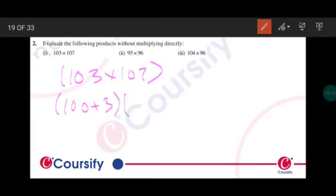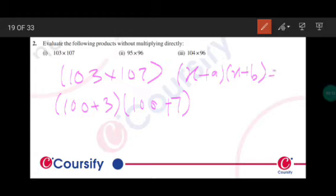And 107 can be written as 100 plus 7. So using the property that is x plus a into x plus b equals x squared plus a plus b times x plus ab. In this we have x equals 100, a equals 3, b equals 7.